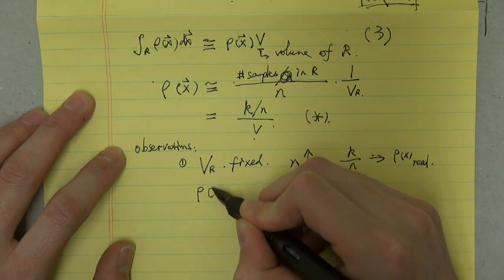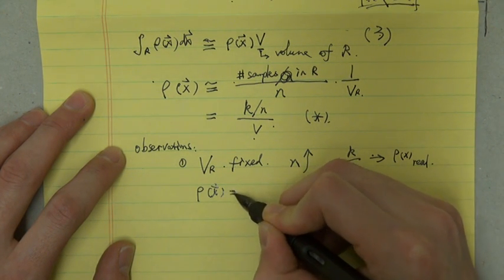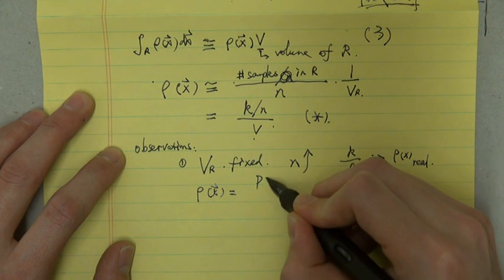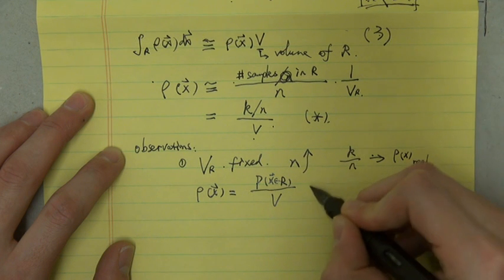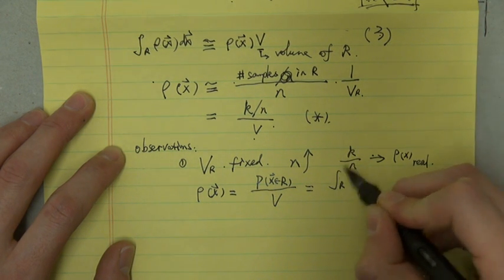That means ρ(x⃗) equals the probability x belongs to R divided by V.